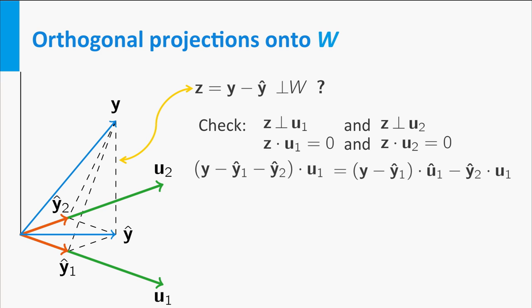Rewriting Z in terms of the orthogonal projections of Y onto U1 and U2, you see that the inner product of the last term is equal to 0, because Y2 hat is the orthogonal projection on U2 which is orthogonal to U1 because the basis is orthogonal.